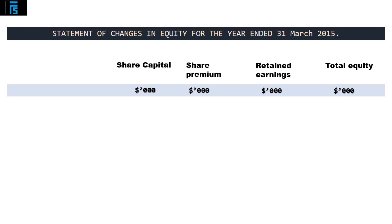On the left-hand side, the first line is going to be the balance as at 1st April 2014, the start of the financial year. However, before we are able to populate this row with numbers, we must first take account of the information contained in note number 1, which reads: the equity shares and share premium balances in the trial balance included a fully subscribed 1 for 5 rights issue at $1.60 per share, which was made by Clarion on 1st October 2014.